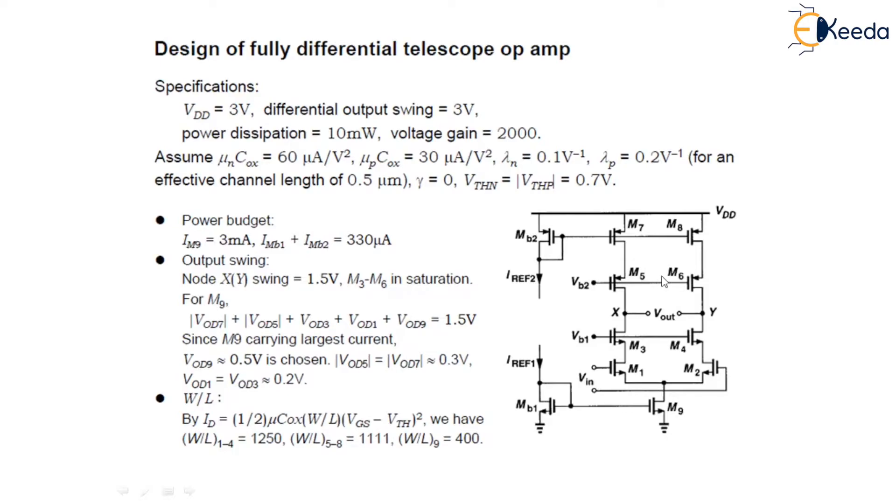So, for this M9, as we have said, each cascode branch of the op-amp carries a current of 1.5 milliamperes. So, we have all the voltages, that is the sum of VOD7 plus VOD5, VOD7, VOD5.